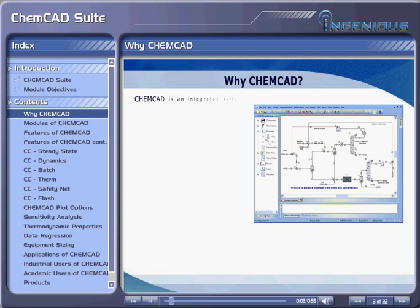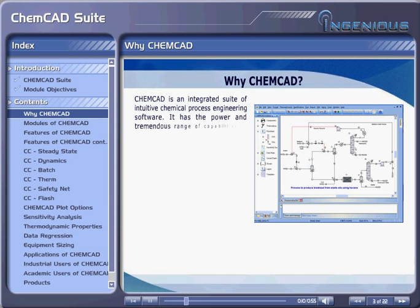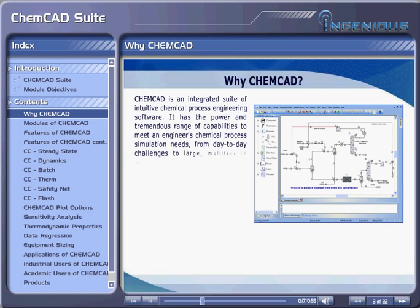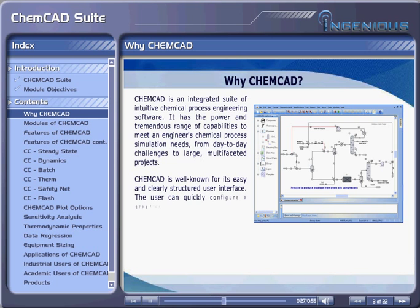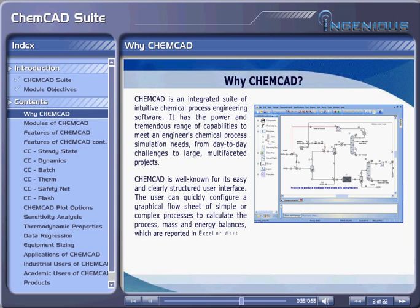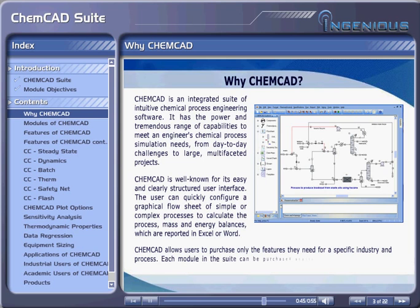Why ChemCAD? ChemCAD is an integrated suite of intuitive chemical process engineering software. It has the power and tremendous range of capabilities to meet an engineer's chemical process simulation needs, from day-to-day challenges to large, multifaceted projects. ChemCAD is well known for its easy and clearly structured user interface. The user can quickly configure a graphical flow sheet of simple or complex processes to calculate process, mass, and energy balances, which are reported in Excel or Word. ChemCAD allows users to purchase only the features they need for a specific industry and process. Each module in the suite can be purchased separately, and all modules work together within the same interface, resulting in maximum flexibility and affordability.